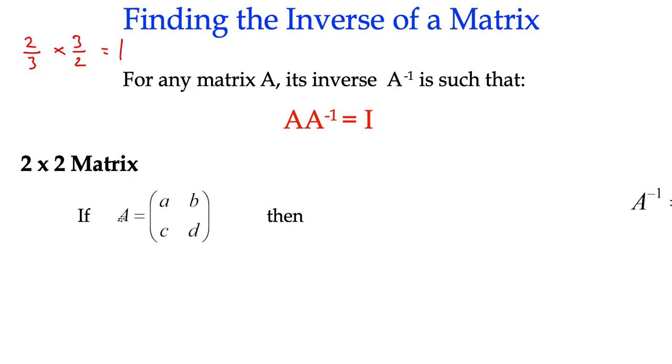So if we've got some matrix A, B, C, D, then in order to work out its inverse matrix, which is A, and it's a little negative 1, it's not to the power negative 1, well, I suppose it technically could be 1 over A, but we call it A^(-1), the inverse matrix of A.